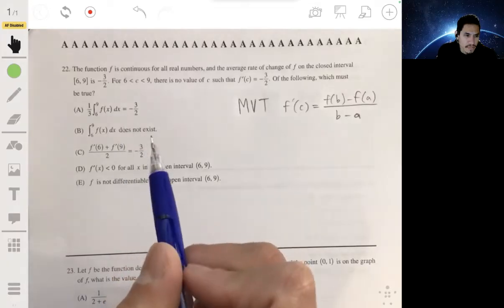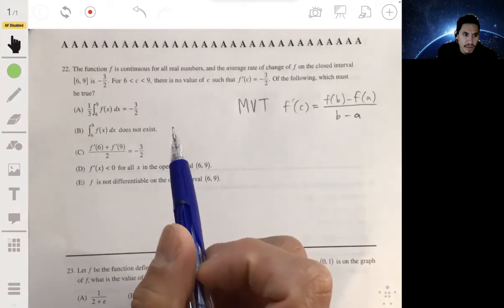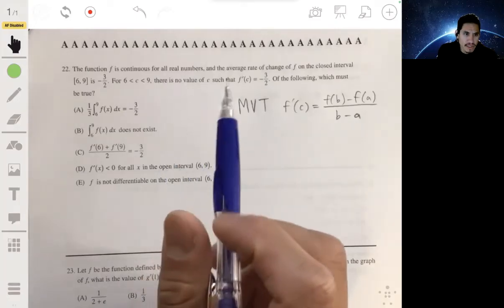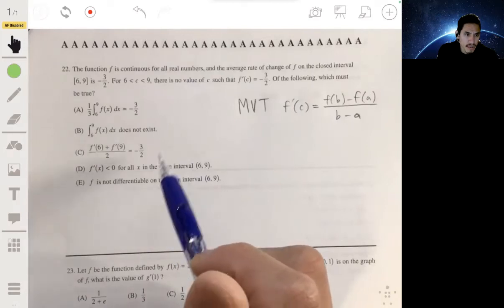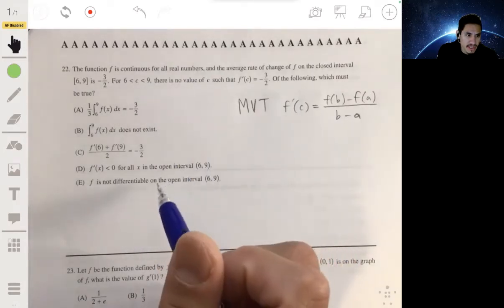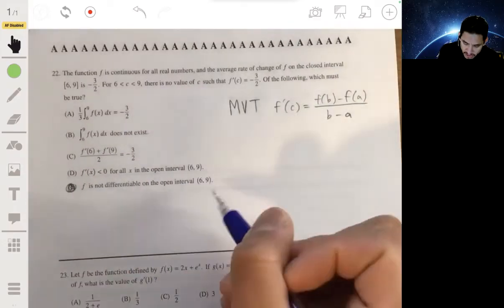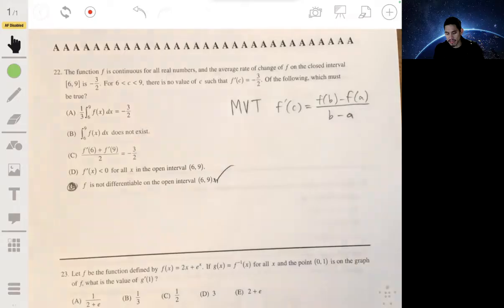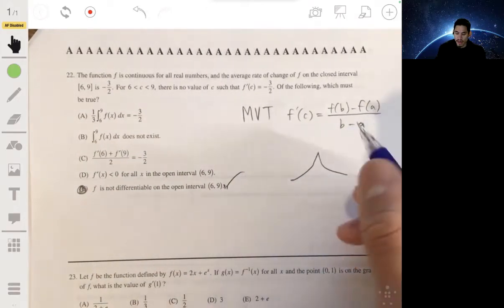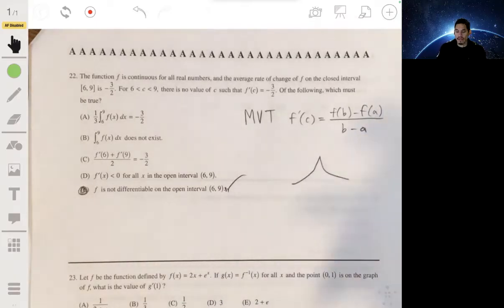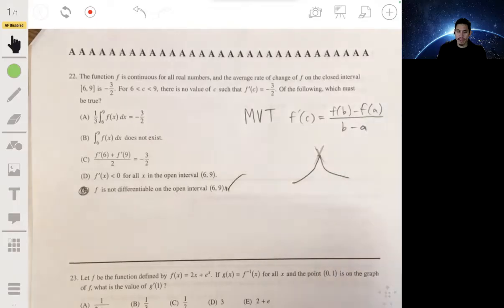The conditions is that it has to be differentiable and continuous. It says it's continuous, but if there's no value of c, then it can't, it has to be E because then f is not differentiable on that interval. It probably has some weird cuts where the right hand and left hand slopes don't equal each other.